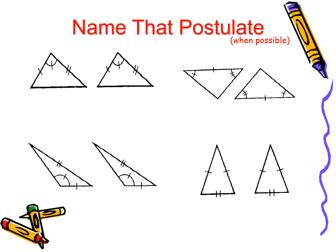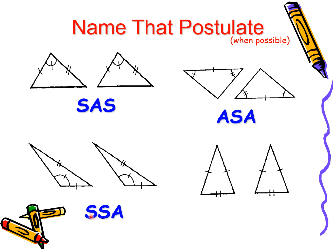Let us try some examples. For the first set of diagrams: it is SAS — side, angle, side. In the second diagram, we have ASA — angle, included side, angle. For the third, it is SSA — which is a big no. For the fourth, it is obviously side, side, side — so SSS.